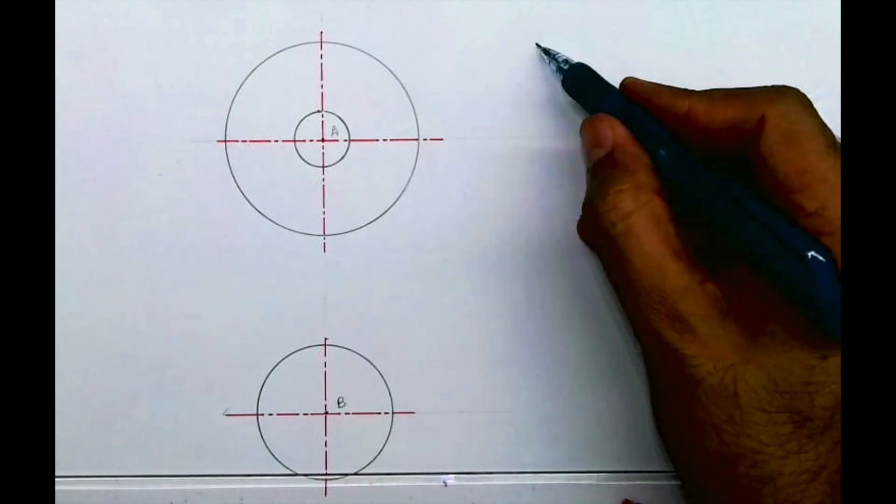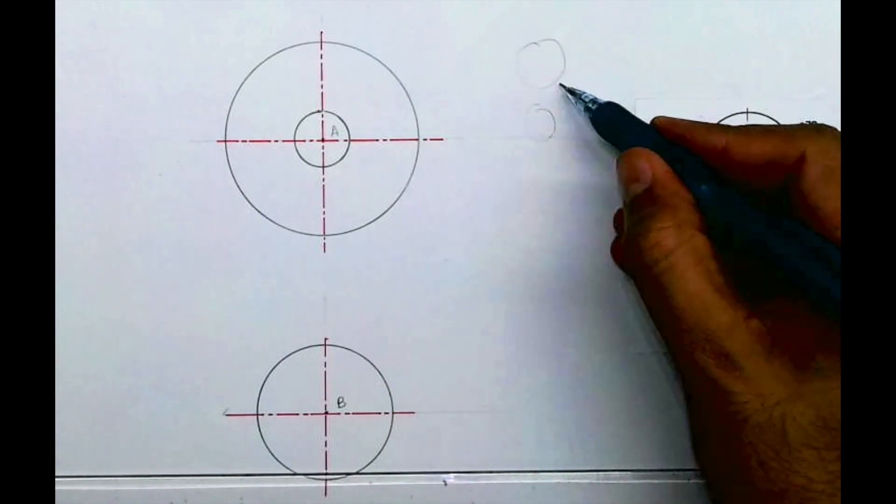Now we need to draw radius 30. If you see, this radius 30 is an external arc.